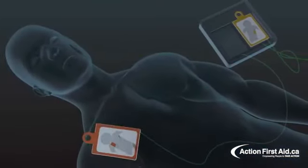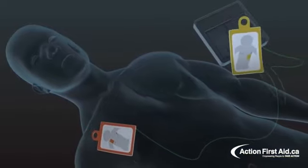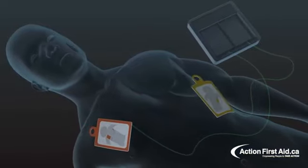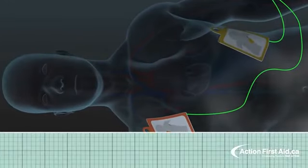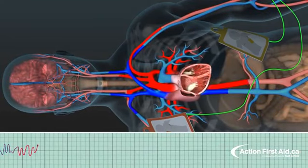Once you turn on an AED, the machine will begin to speak to you. Follow the voice prompts. Once the pads have been placed, the AED will instruct you to stand clear and to not touch the patient while it does an ECG of the heart.